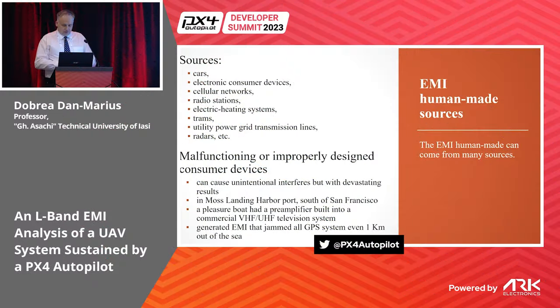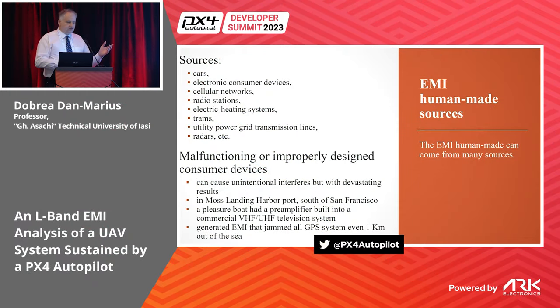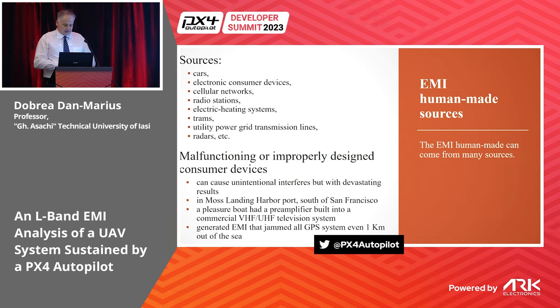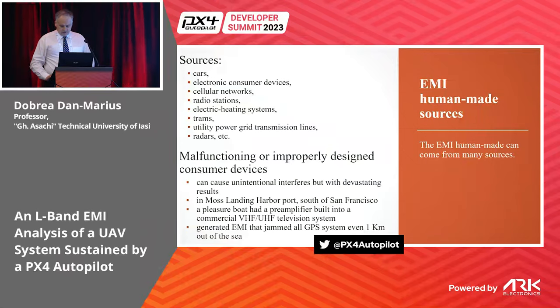From the point of view of artificial electromagnetic interferences, there are a large number of sources and devices — your smartphone from your pocket, different types of electric heating systems, utility power grids, drying radars, and so on. It's interesting to mention improper design consumer devices. Due to this kind of device, an entire port and its surrounding area were impossible to use to get GPS data.